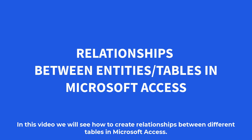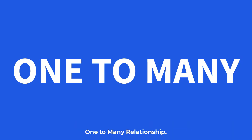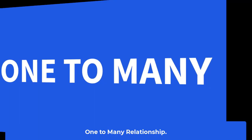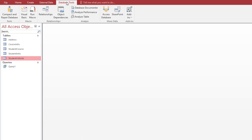In this video we will see how to create relationships between different tables in Microsoft Access. Click the Database Tools tab and then click Relationships.